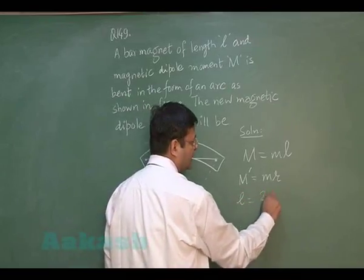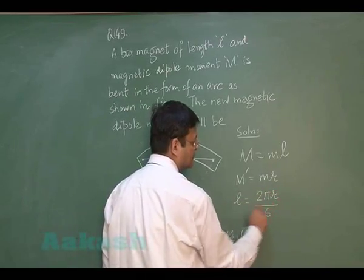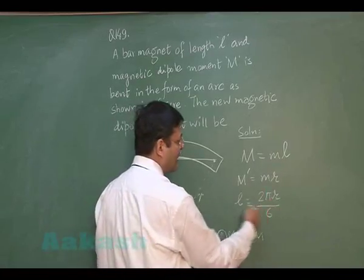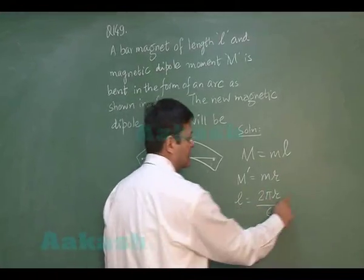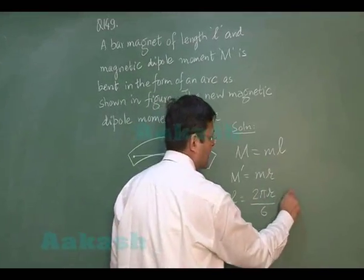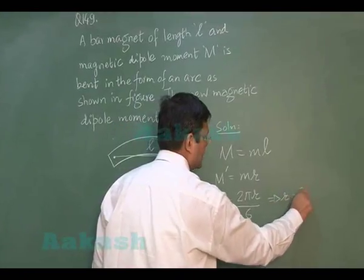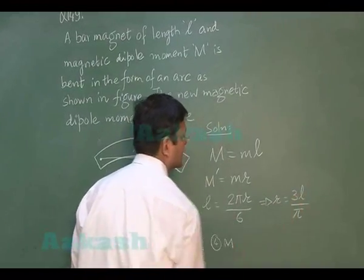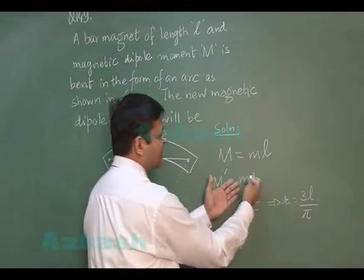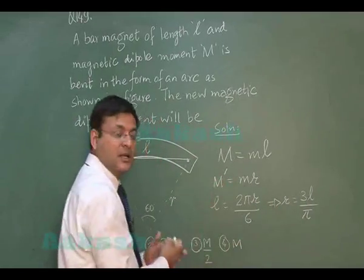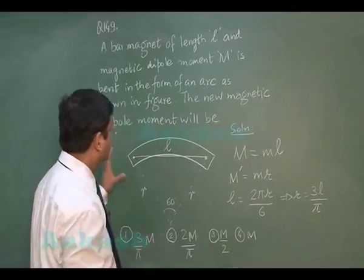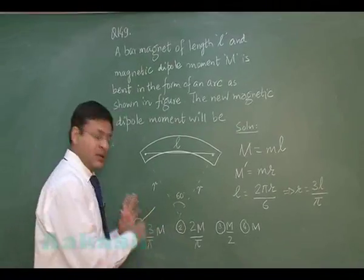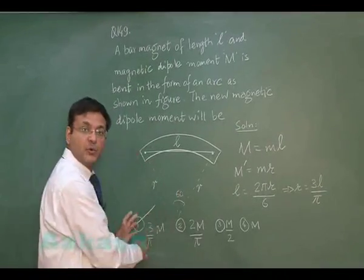Here, l is one-sixth of the circumference, so: l = 2πr/6. Substituting, r = 3l/π. Substituting this expression back, the new magnetic dipole moment comes out to be 3m/π. This is the most appropriate option for this question.